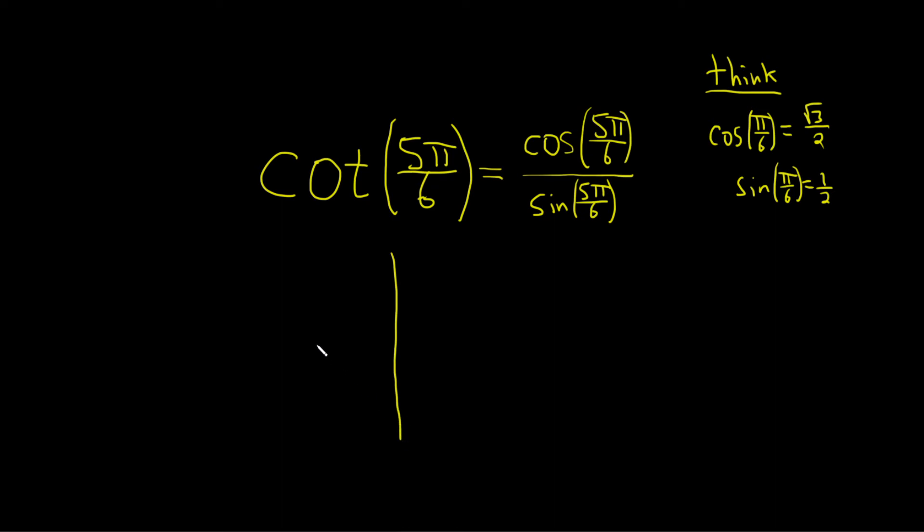To do that, we'll do a rough sketch of the unit circle. This is 0, this is π over 2, and this is π. We're going to think of π as 6π over 6 because we're looking for 5π over 6. That would mean 5π over 6 is right here because it's π over 6 less.